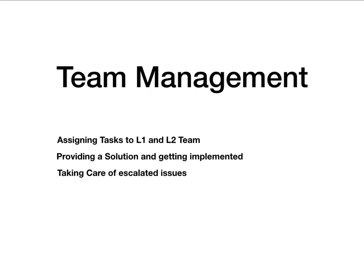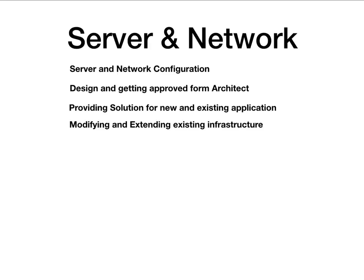Server and network responsibilities: the role of an L3 engineer includes configuration of servers and designing network architecture. This design then needs to be approved — every organization has an architect and higher management who must approve it. The L3 engineer will design the architecture diagram, give a presentation to the architect or higher management, and get approvals. Providing solutions for new things as well as existing applications is also part of this responsibility.